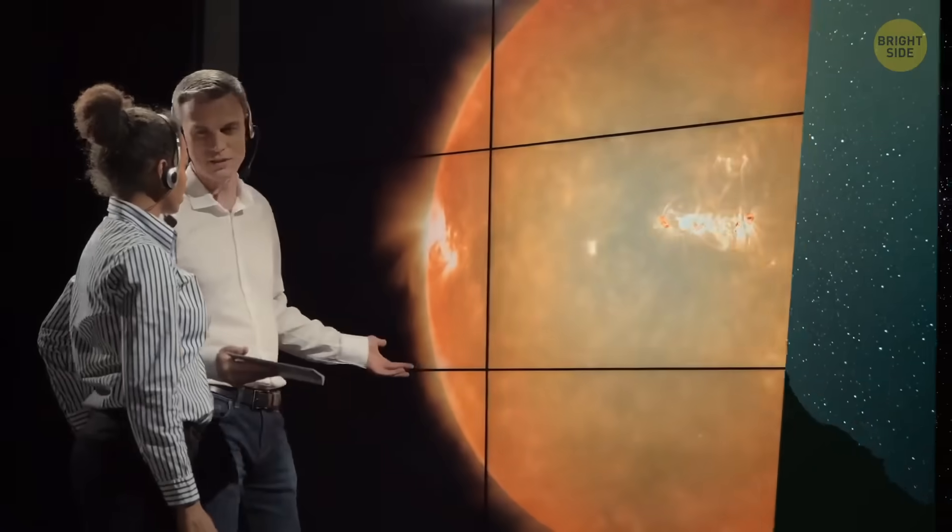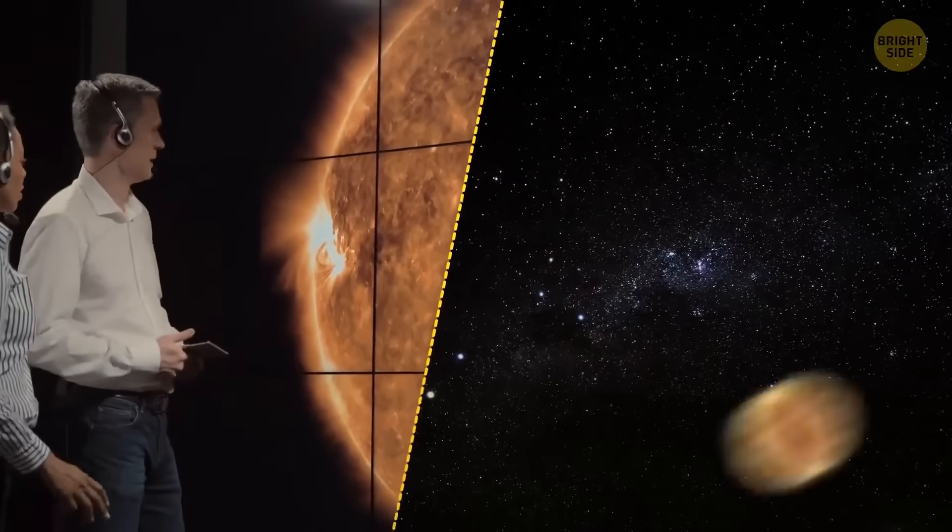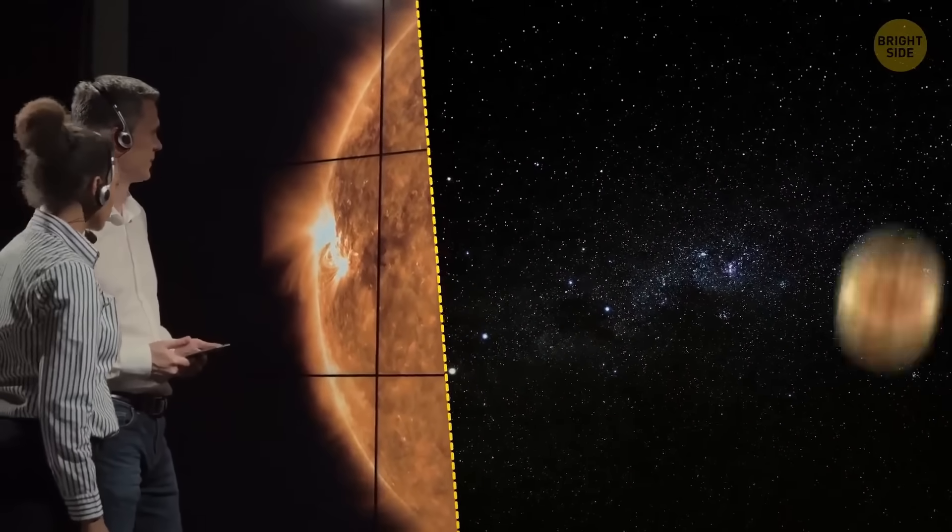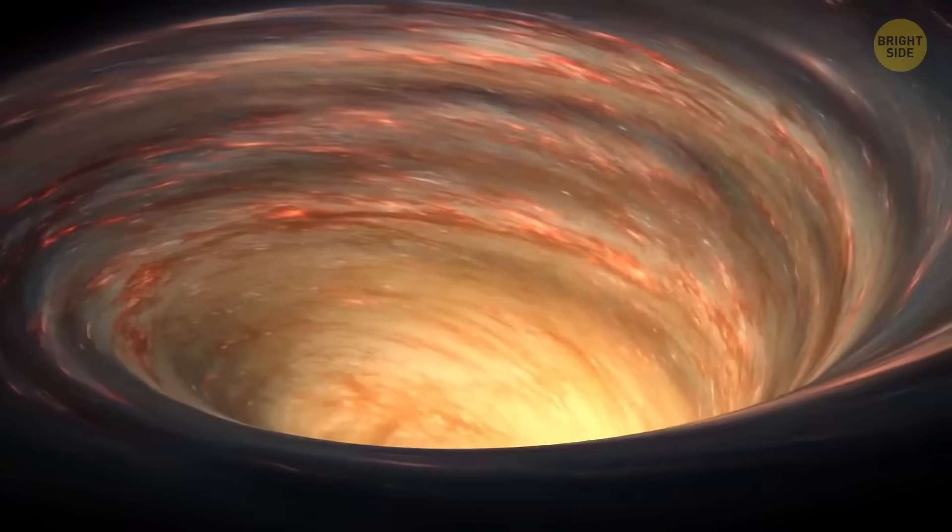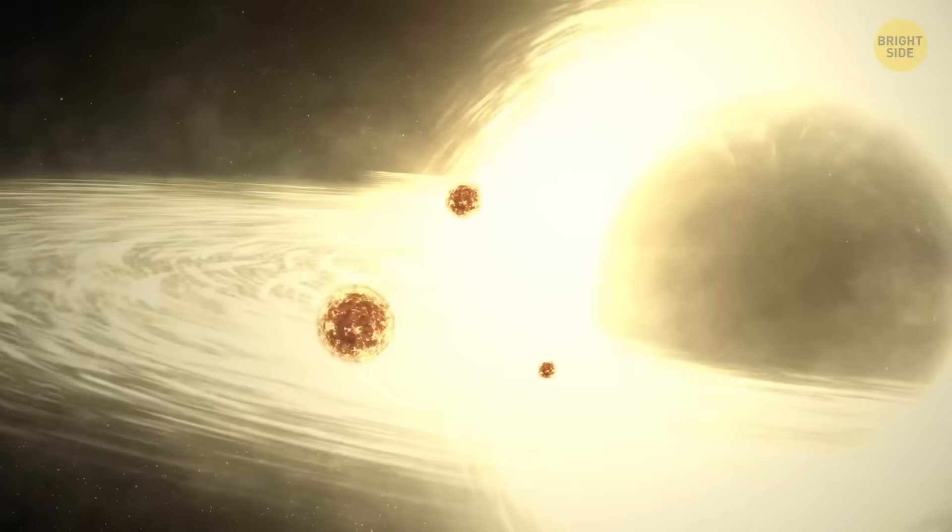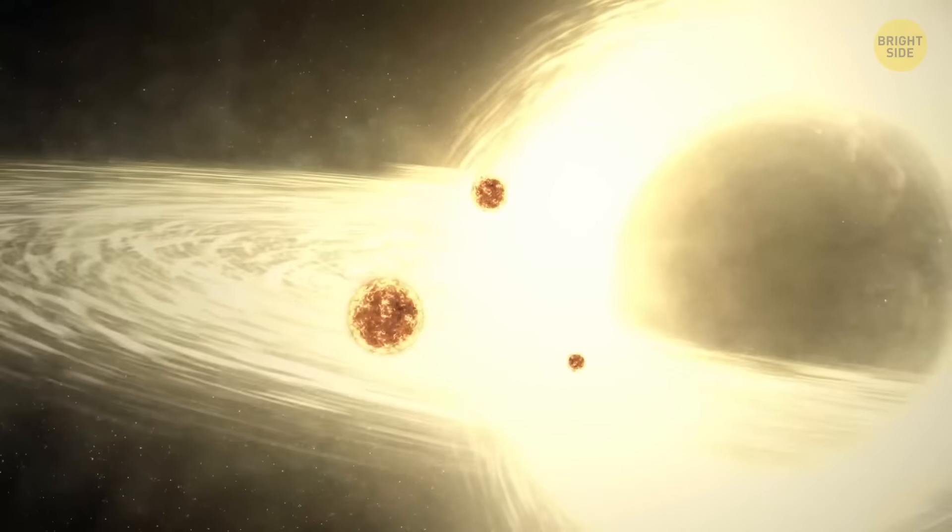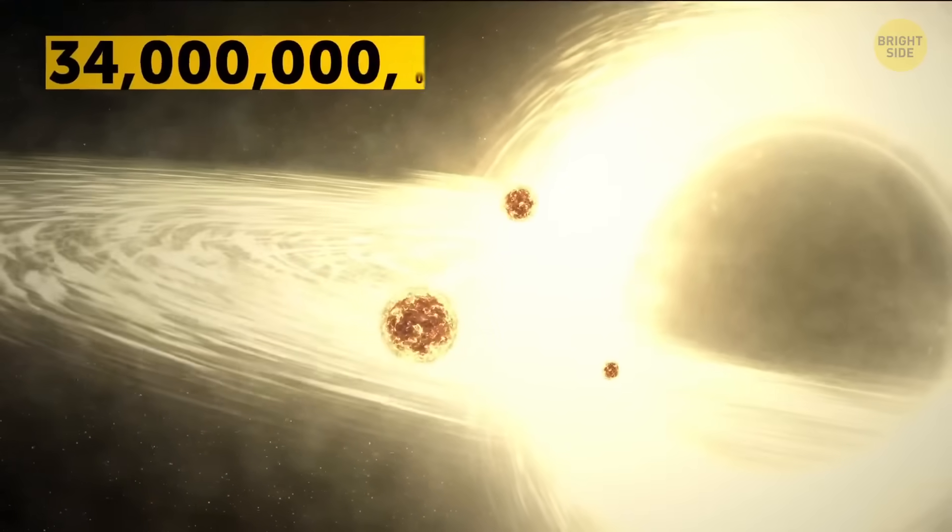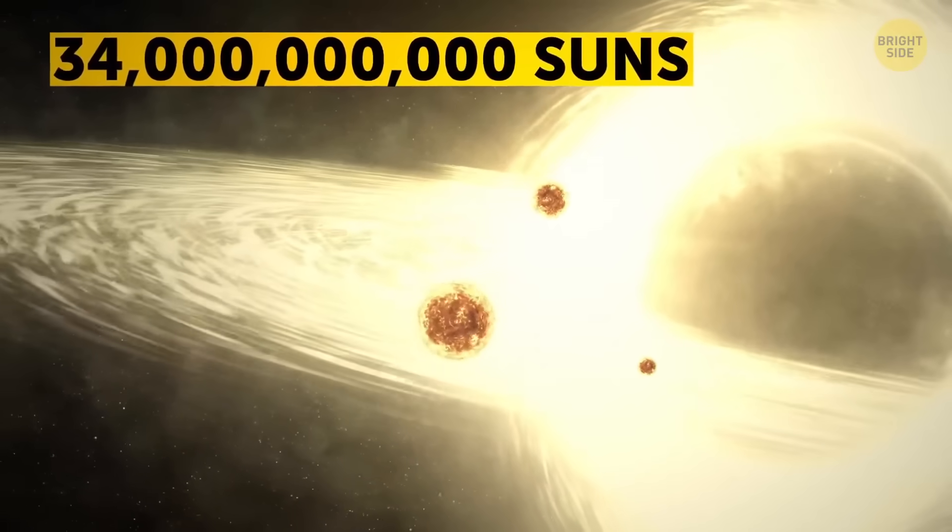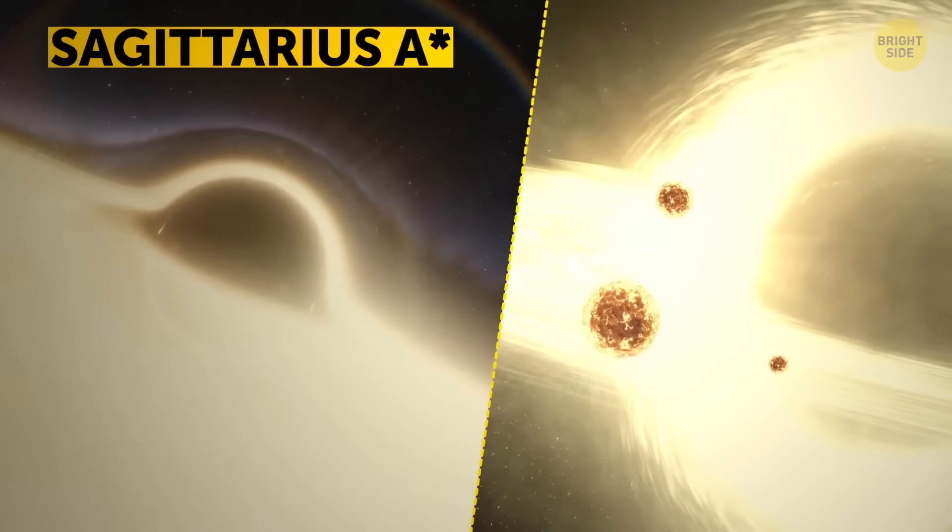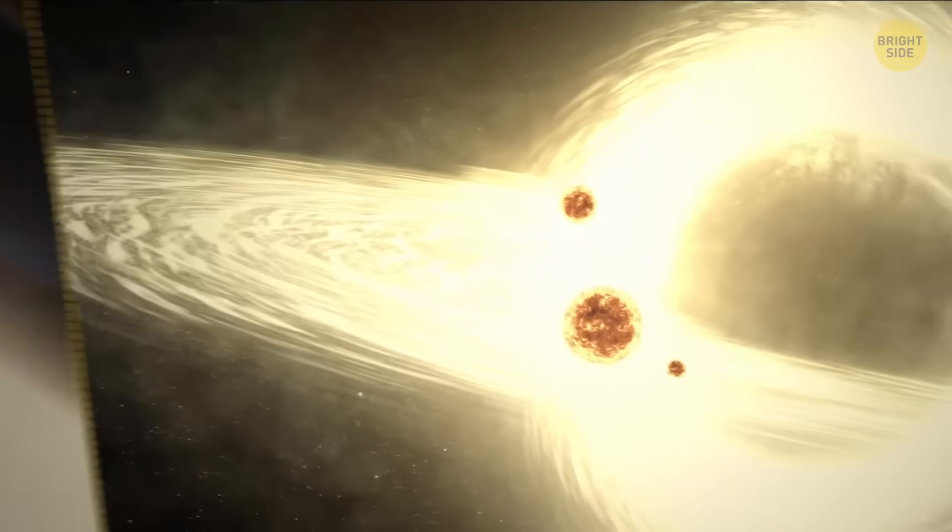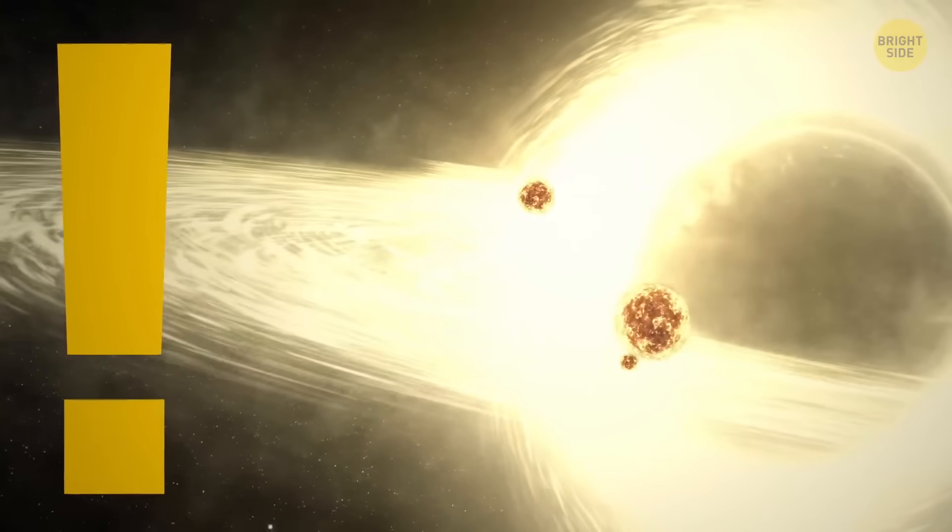Scientists found it when they noticed a star behaving weirdly. It was a giant, rotating like crazy. They guessed it must have a powerful gravitational companion. The hungriest black hole astronomers have spotted so far weighs as much as 34 billion Suns and is about six times bigger than the one at the center of the Milky Way. It eats the equivalent of one Sun every day.